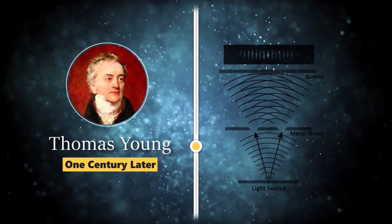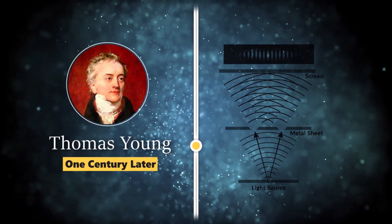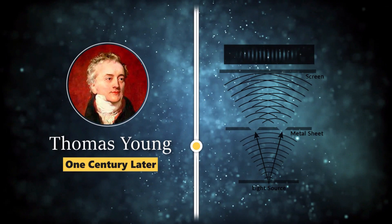After about one century, the double slit experiment of Thomas Young derived evidence that could be explained only if we know the light as a wave.